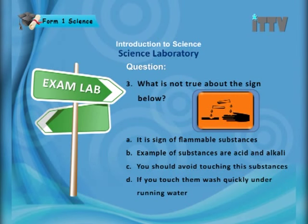Question three: what is NOT true about the corrosive sign? A — it is a sign of a flammable substance; B — examples are acids and alkalis; C — you should avoid touching this substance; D — if you touch them, wash quickly under running water. The correct answer is A — it is a sign of a flammable substance. This is not true; the sign of a flammable substance shows a flame or fire symbol.